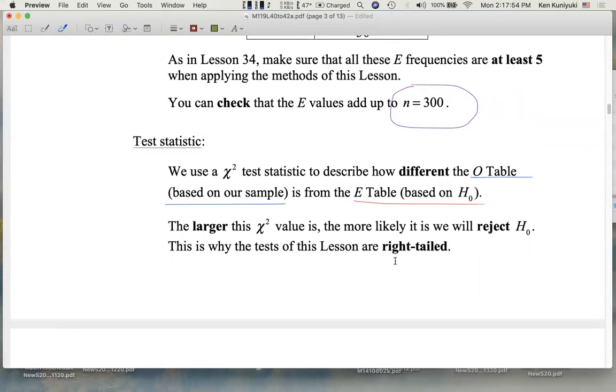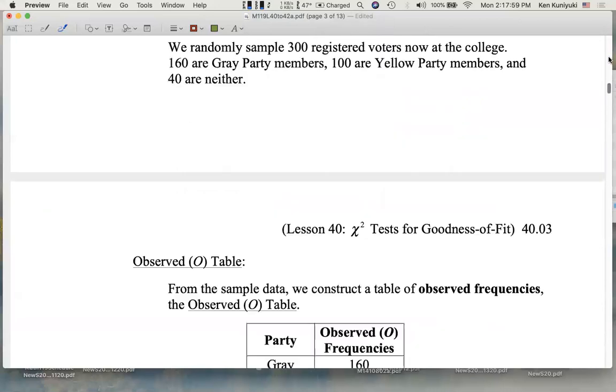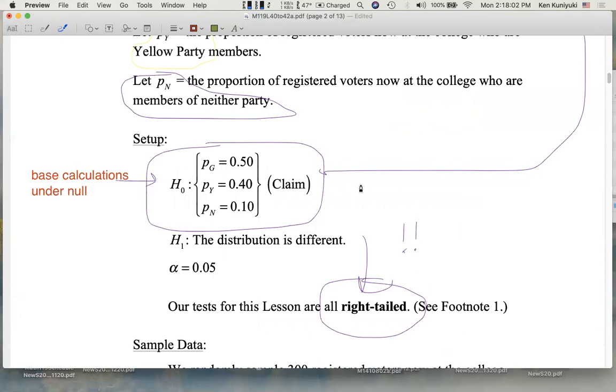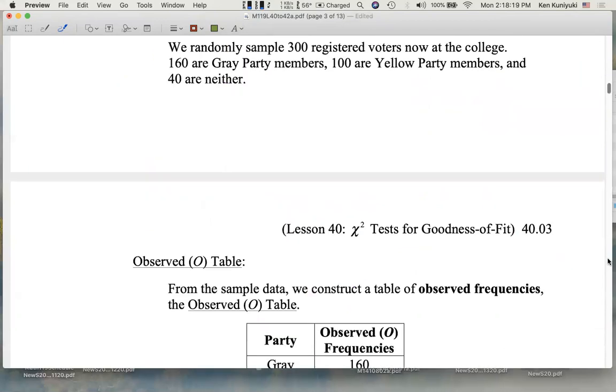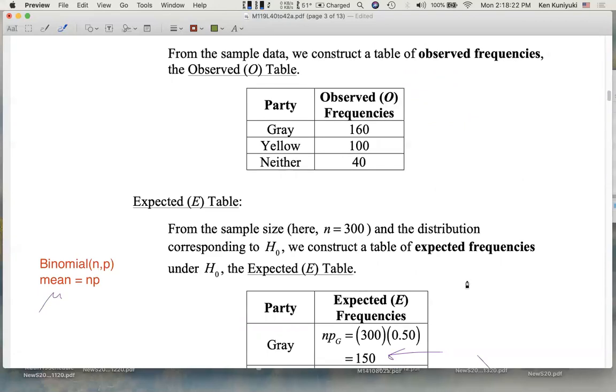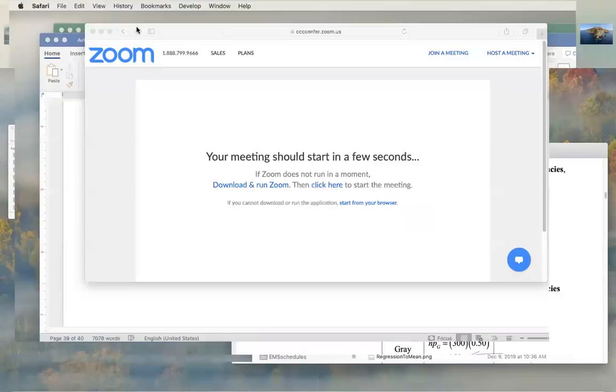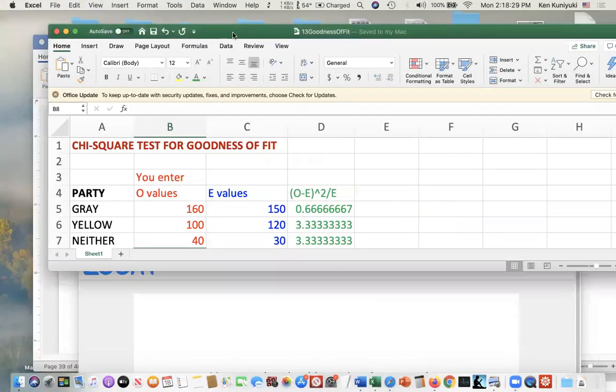And that's why the tests of this lesson and the next one are right-tailed. The null hypothesis corresponds to a situation where the test chi-square is zero. The alternative is more favored if you have a higher value for chi-square, which corresponds to a greater distinction between these two tables. And in fact, I have Excel to help out here.